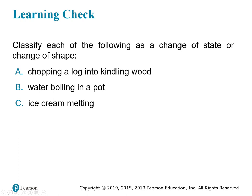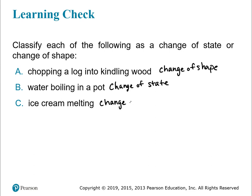Let's do a quick practice to identify each as a change of state or a change of shape. Chopping a log into kindling wood — we're chopping it up into small pieces; that's a change of shape. Water boiling in a pot — liquid water is turning to vapor; that's a change of state. Ice cream melting — ice cream is solid-ish, and when it melts it's definitely more liquid, so that is a change of state.